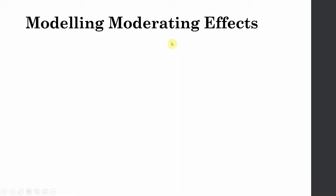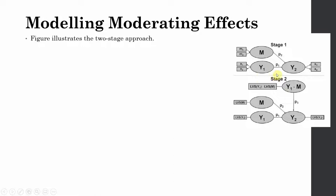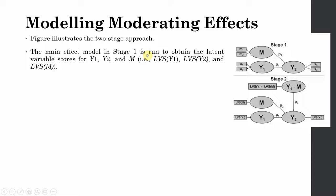This figure illustrates the two-stage approach we are going to use for moderation analysis. Stage 1 is the main effect model showing the impact of the moderator on the dependent variable and the impact of the independent exogenous variable on the dependent variable. The relationship P1 is being moderated by the moderating variable M, and this two-stage approach is recommended for modeling moderating effects.